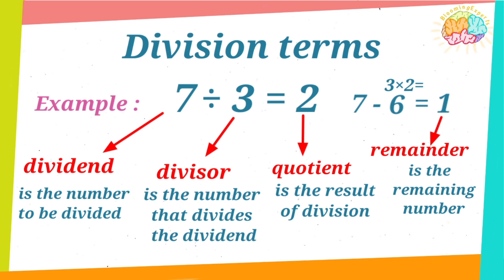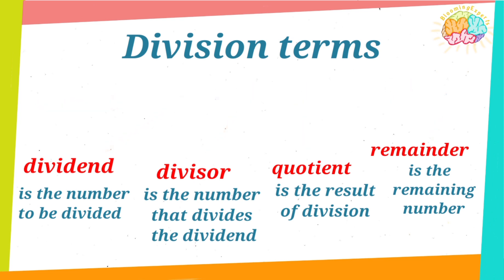So, the division operation is dividend divided by divisor equals quotient plus remainder.